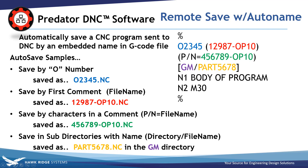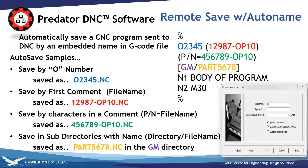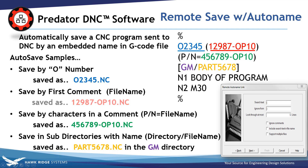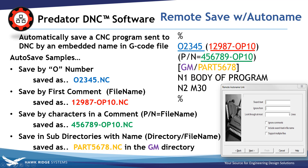Automatically save and name a CNC program back to the network. There are several ways to do this, set in the remote auto name link of the DNC software. The first example is the blue section where we save by O number — saved as O2345.nc. Next is saving by what is in the first set of parentheses — the red section is saved as 12987-OP10.nc. Next is the green section where we save by a unique character string in that comment; in this case it is p/n equals, saved as 456789-OP10.nc. The last example is specifying a subdirectory to save in — the purple gm is the subdirectory and the yellow is the file name, saved as part5678.nc in the gm directory.